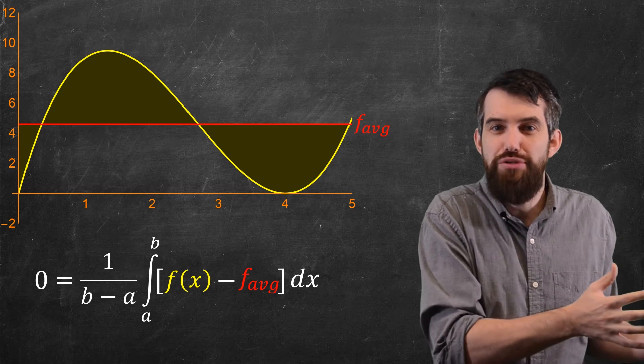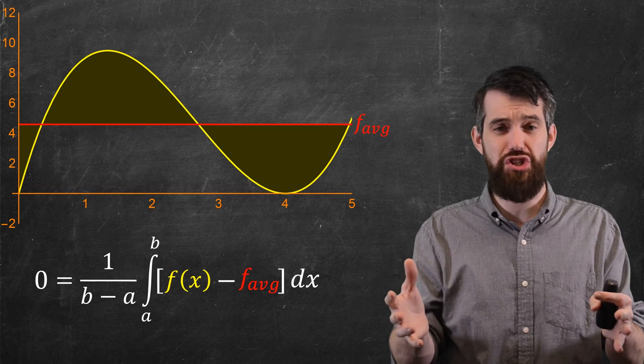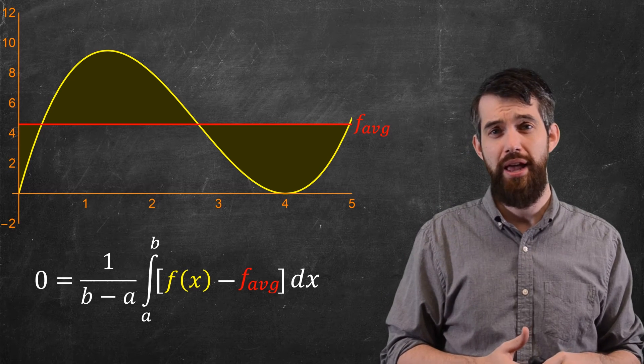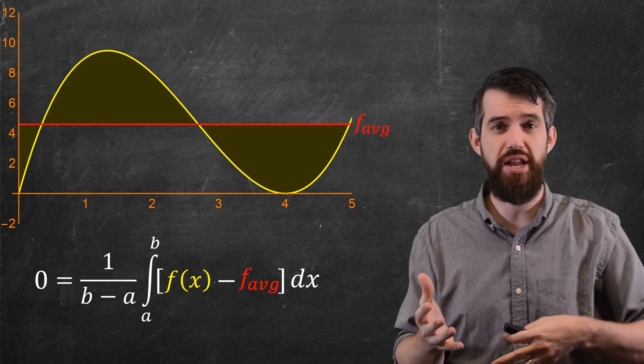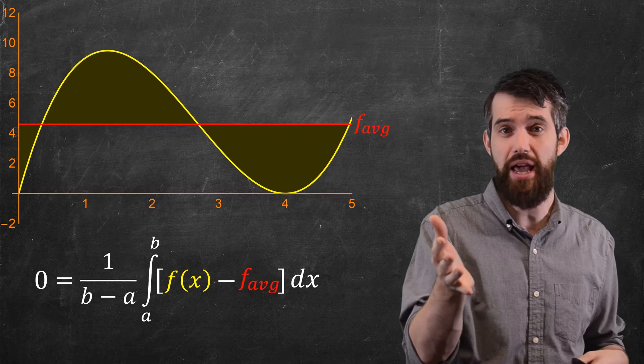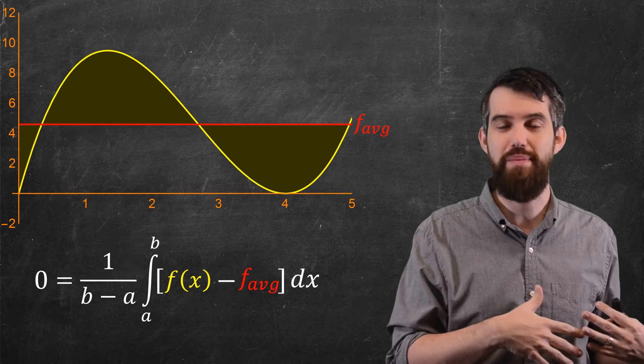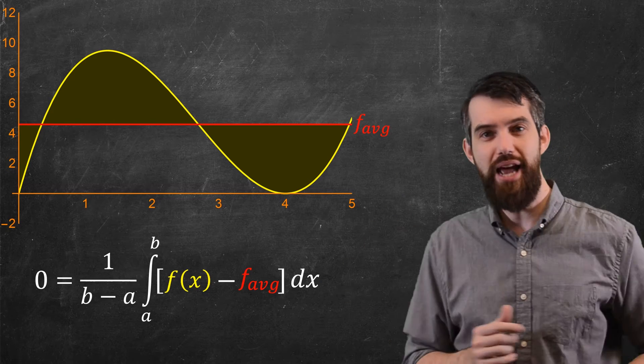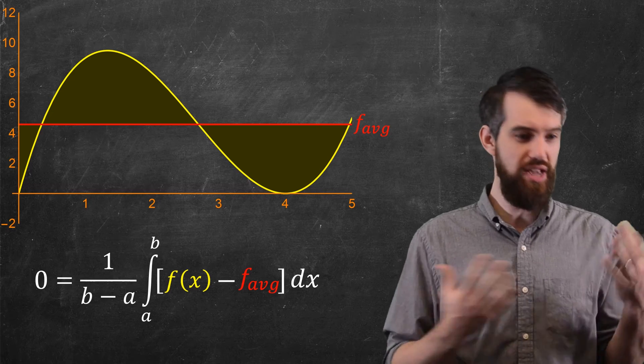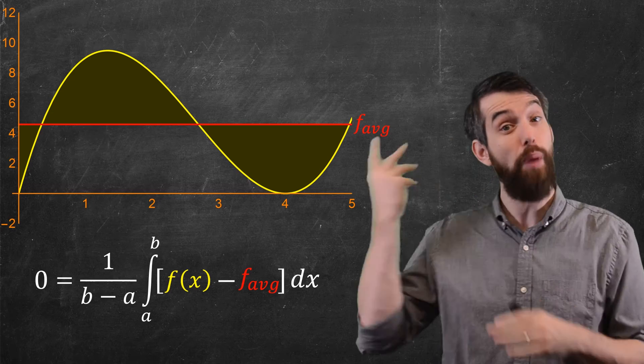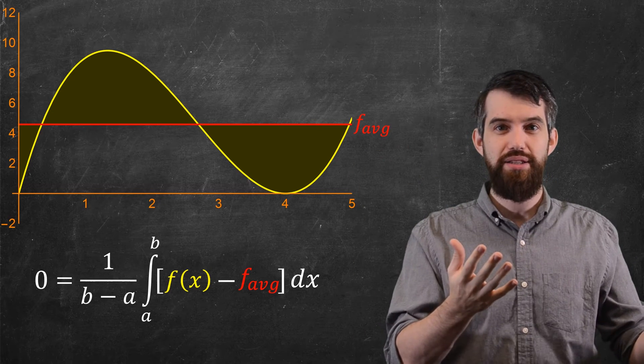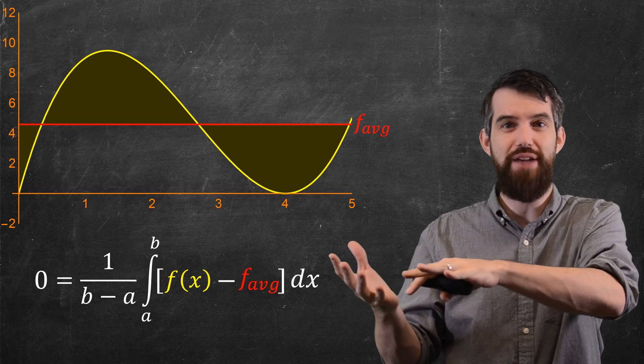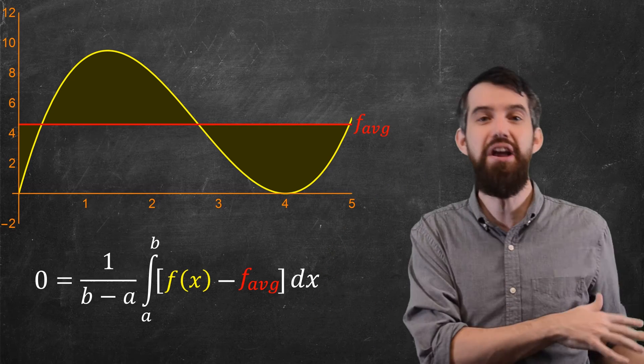Now, the reason I am allowed to do that is that f average is just some particular value. And if it's some number and I integrate it, you would get that number times b minus a. So if you divide out by b minus a, it cancels and so you're allowed to do this. But what this formula tells me is that effectively the integral of this difference, the parts I've shaded, has to be zero. So that means the positive contributions have to add up to being equal to the negative contributions.